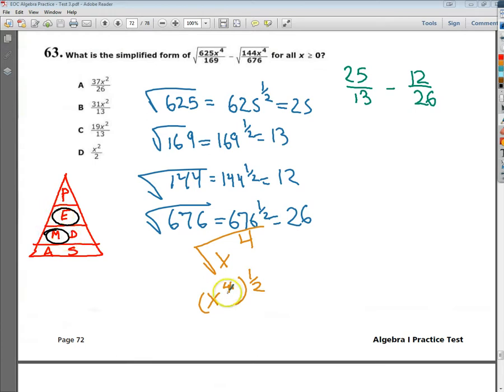So really, I need to think of this as x to the 4th, and it's 4 times 1 half, which is, of course, x to the 2nd power.